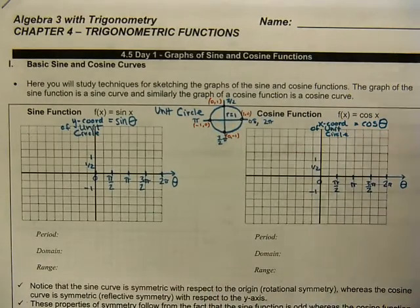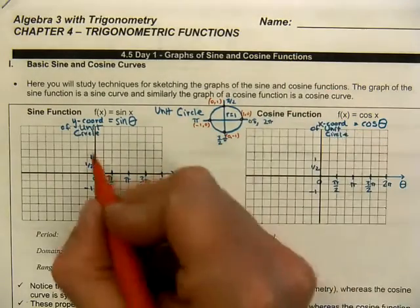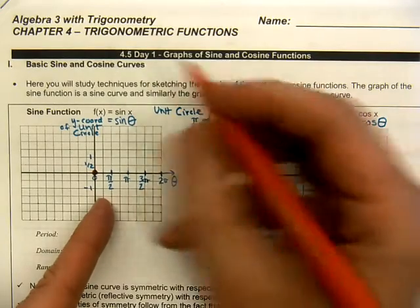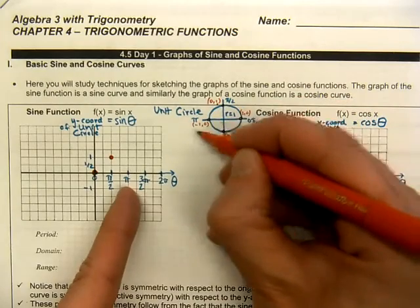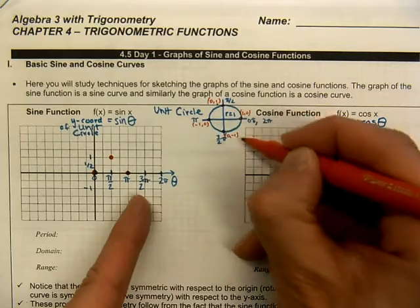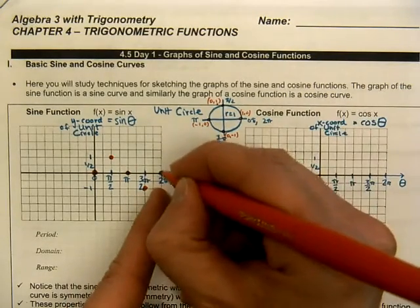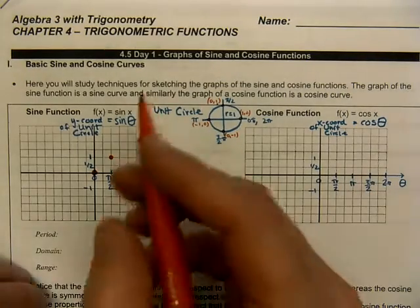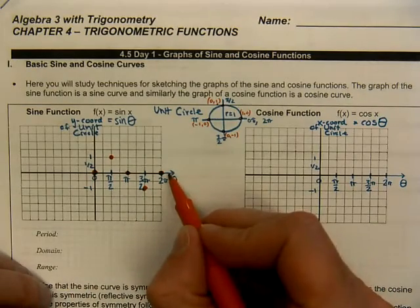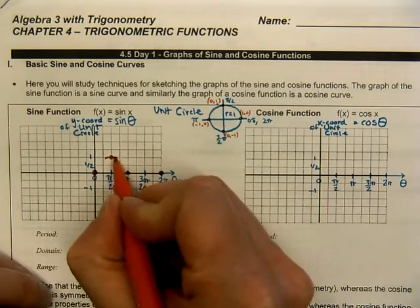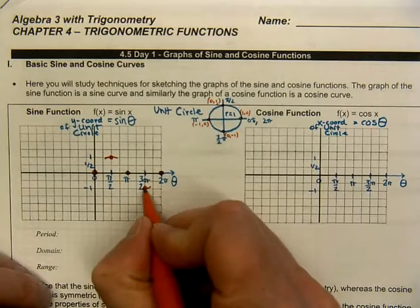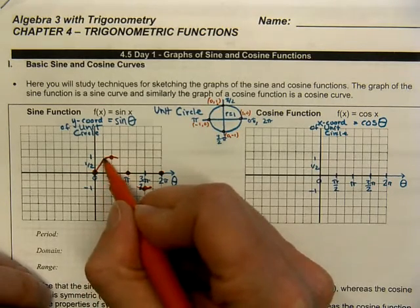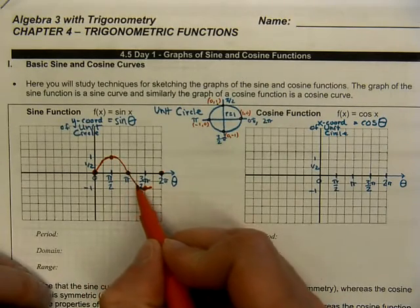At zero radians the y-coordinate is zero, so we plot that point. At π/2 the y-coordinate is one. At π it's zero again. At 3π/2 it's negative one, and back at 2π we return to zero. These are the five critical values you need to memorize. To connect them, draw a smooth curve — at the maximum point make it almost horizontal with a slight curve, at the lowest point give it a slight curve, then go up at roughly a 45-degree angle.